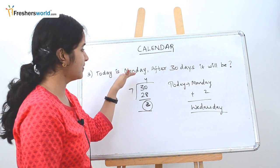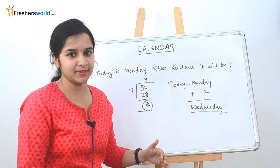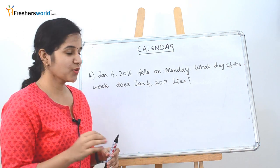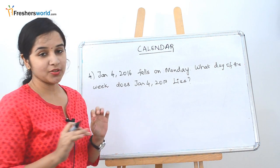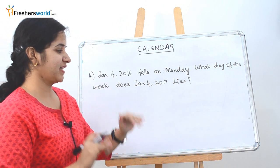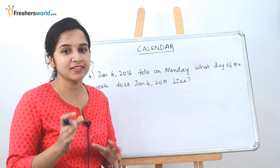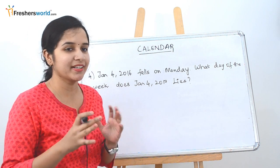They will ask the same question with different days. It will be the same method that will be following for every other sum. Let's solve another sum. So the next question is Jan 4, 2016 falls on a Monday. So what day of the week does Jan 4, 2017 lies? So if you have seen our calendar first part video, it would have been discussed about the odd days in a normal year and a leap year.